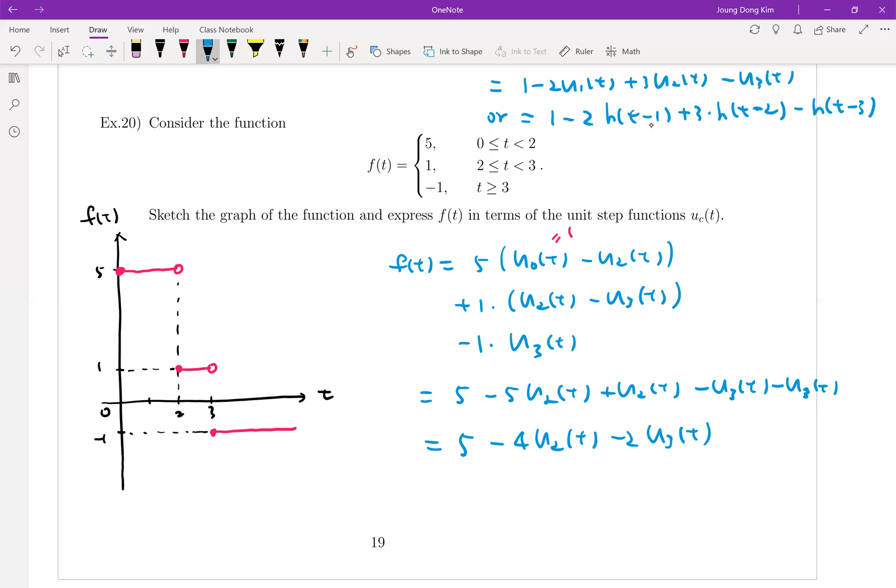Or in Heaviside function form, it will be 5 minus 4 times H(t minus 2) minus 2 times H(t minus 3). So let me give you one more problem. Then we can talk about Laplace transform of the unit step function.